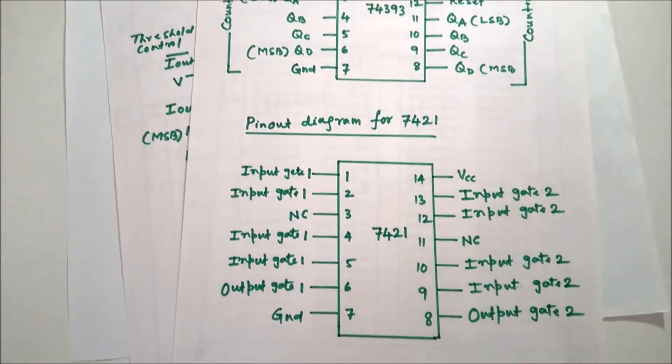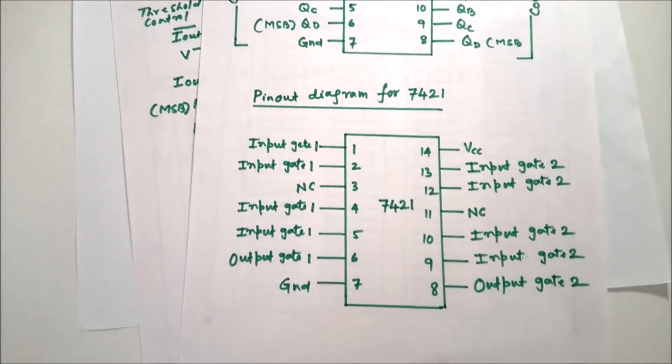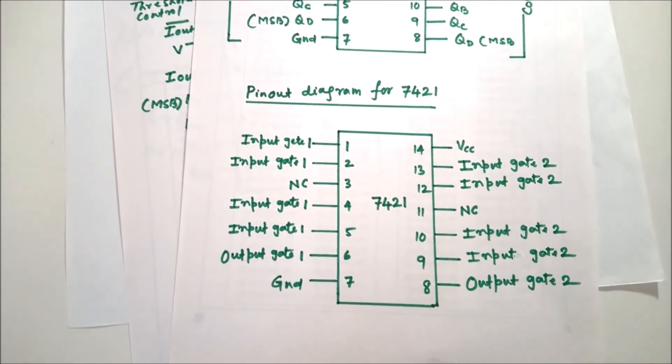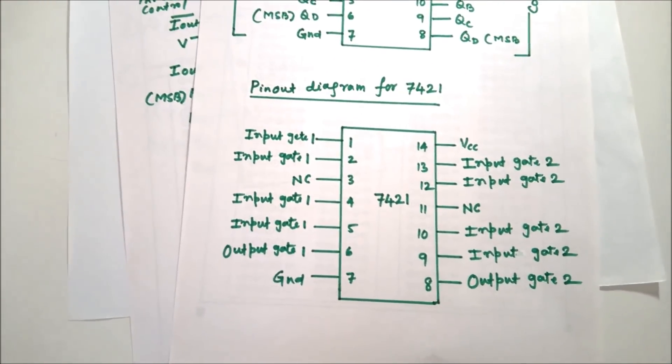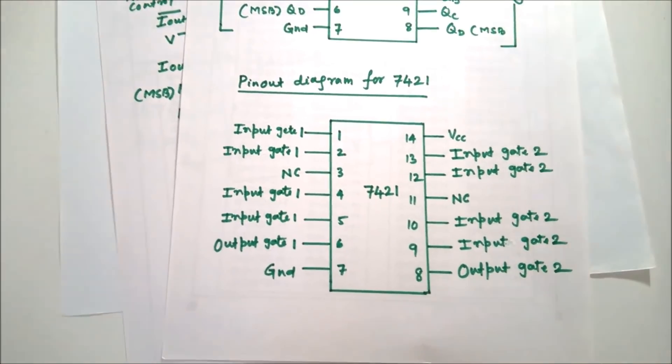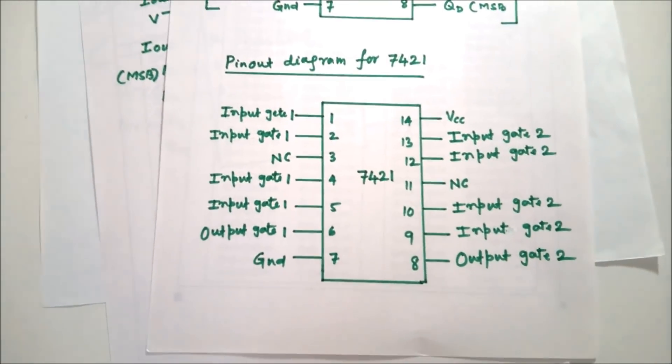The 7421 is a 4-input AND gate and we will be using that. This is its pin diagram.